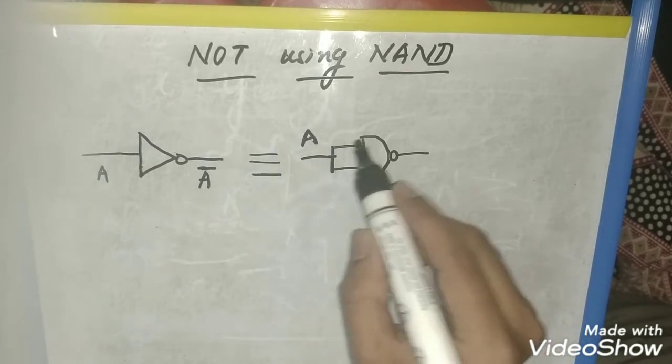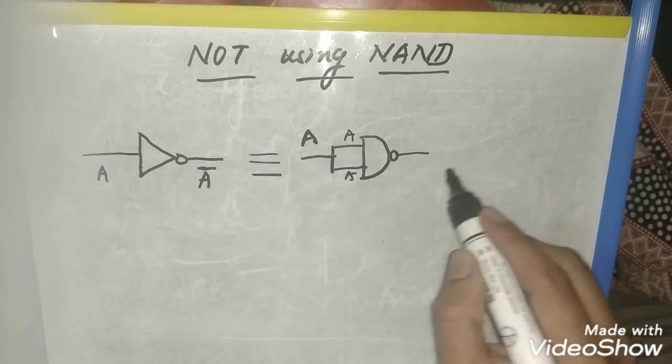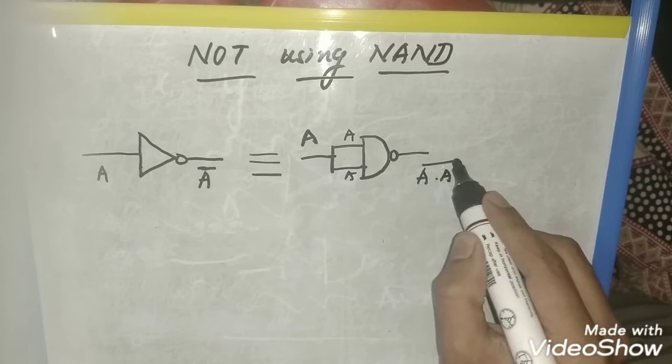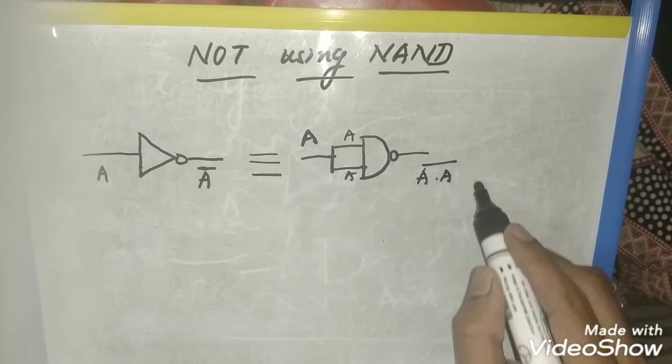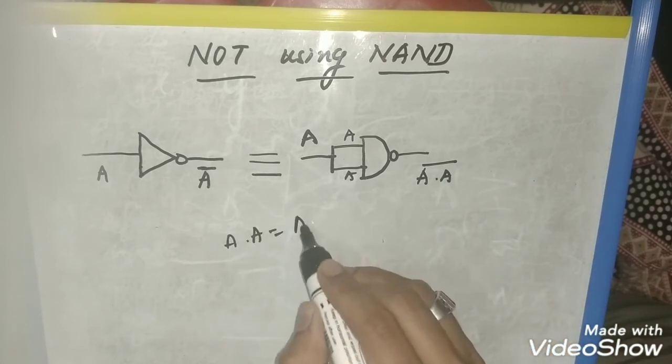When you give A as an input, it will go to both the inputs as A, A, and the output for this will be A dot A bar. This will be the output of the NAND gate, which is nothing but as per the rule A dot A is nothing but A.